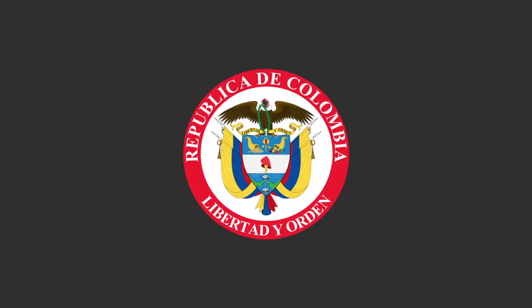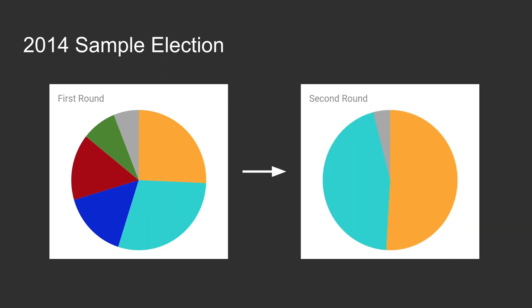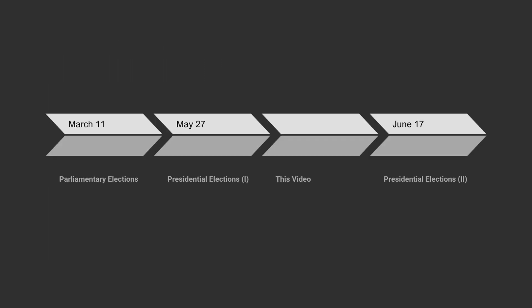For the president, they do the very common first round with many candidates running, and a second round of the top two candidates if there's no one with an absolute majority in the first round. So what exactly is happening in Colombia? Well, they already had their parliamentary elections and the first round of their presidential election. And upcoming on June 17th is the second round for the presidential elections.